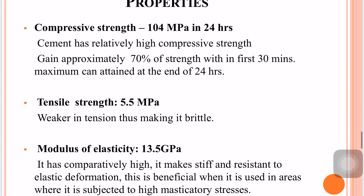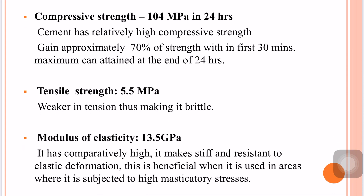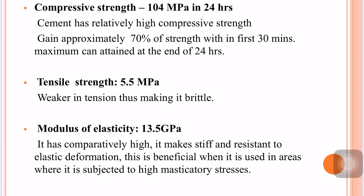Tensile strength is about 5.5 MPa — much less than compressive strength — making the cement brittle, so it cannot be used where tension is applied. The modulus of elasticity is comparatively high at about 13.5 GPa, making the material stiff and resistant to elastic deformation. This is beneficial when used under stress areas subjected to high masticatory forces.